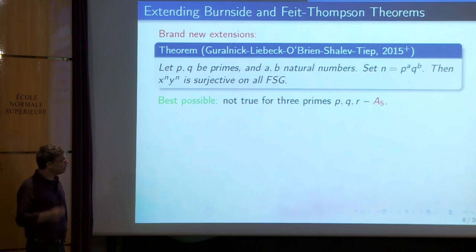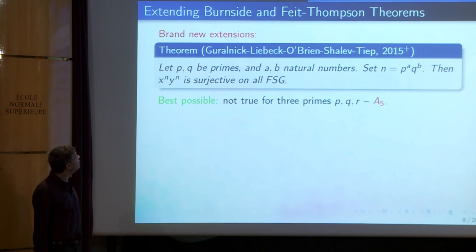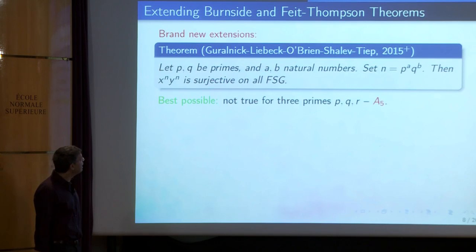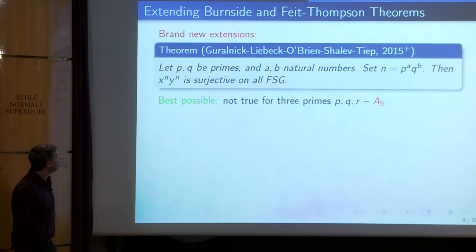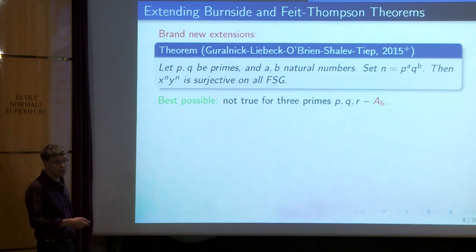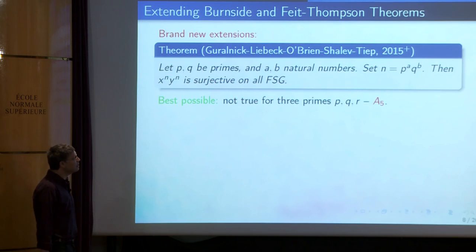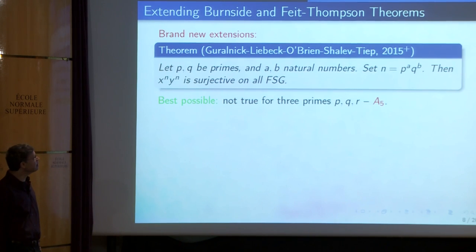Let me move on and give you a brand new result. I'll discuss two results whose proof was just completed for this conference. They are related in a way to classical theorems of Burnside and Thompson. It's joint work with Guralnick, Liebeck, O'Brien, and Tiep. The first result: if p, q are primes and a, b are natural numbers and n = p^a · q^b — a natural number with at most two prime divisors — then x^n · y^n is surjective on all finite simple groups.